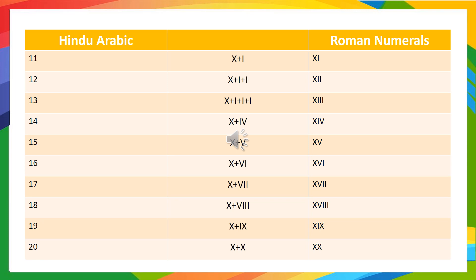19 means 10 plus 9, so we write it as XIX. 20 means 10 plus 10, so we write it as XX.